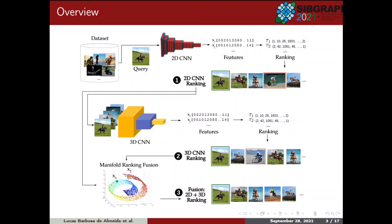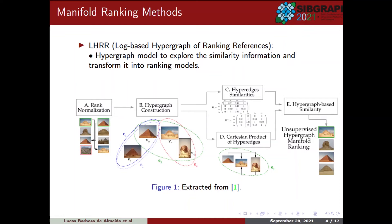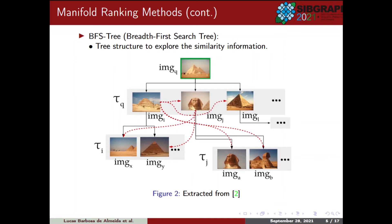Briefly describing the Manifold Learning methods used: the LHRR uses a hypergraph model to explore the similarity information and transform it into ranking models. Secondly, we have the BFS3, which, using a tree structure, explores the similarity information encoded in the ranked list reference.